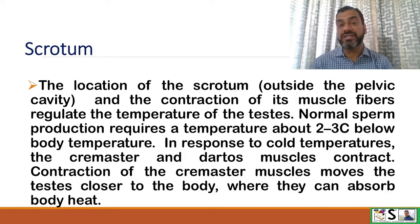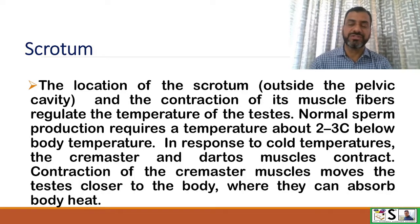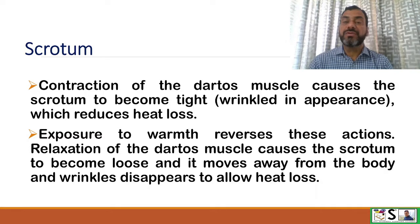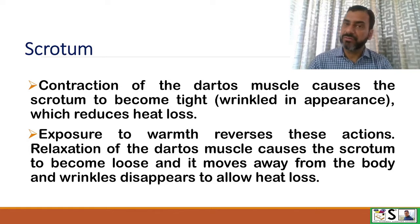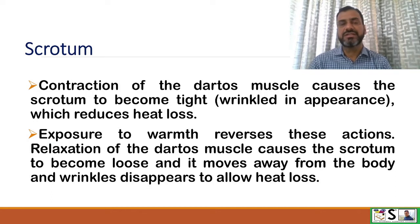Normal sperm production requires a temperature two to three degrees below body temperature. In response to cold temperature, the cremaster and dartos muscles contract, causing the testes to move closer to the body to absorb body heat. The contraction of the dartos muscle causes the scrotum to become tight and wrinkled, which reduces heat loss. During warm weather, the process is reversed: relaxation of the dartos muscle loosens the scrotum, the testes move away from the body, and heat loss is permitted.